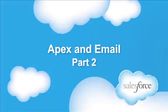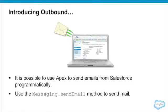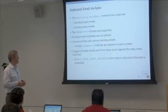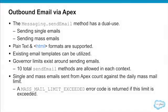When we talk about outbound email, we can send email from Salesforce to a person. There is a messaging class with a send email method. There are two types of emails that we can send: single emails and mass emails. It's analogous to what you've seen within the tool where you send a single email to a contact versus going into a campaign and sending out a mass email. You can send plain text or HTML, and you can utilize email templates — standard mail merge ones or Visualforce email templates.